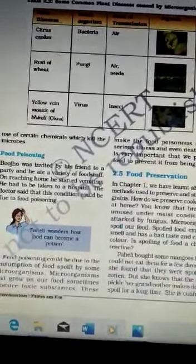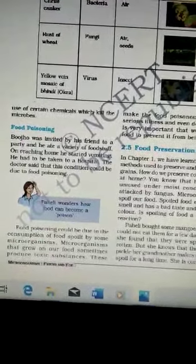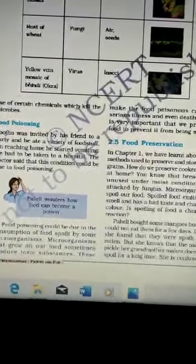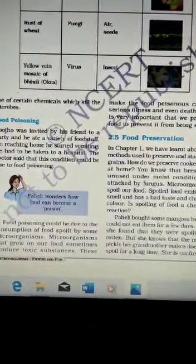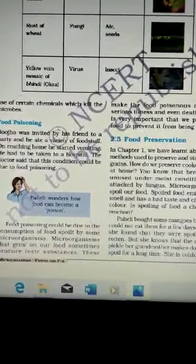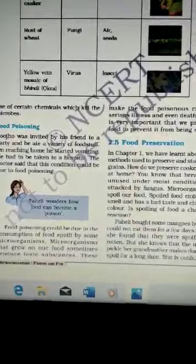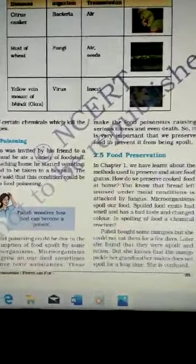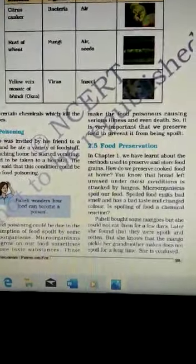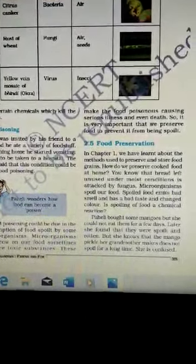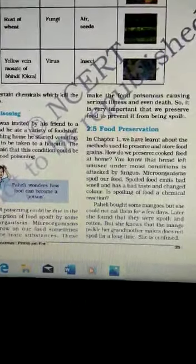The next topic is food poisoning. Food poisoning could be due to the consumption of food spoiled by some microorganisms. Microorganisms that grow on our food sometimes produce toxic substances. These make the food poisonous causing serious illness, even death. So it is very important that we preserve food to prevent it from being spoiled.